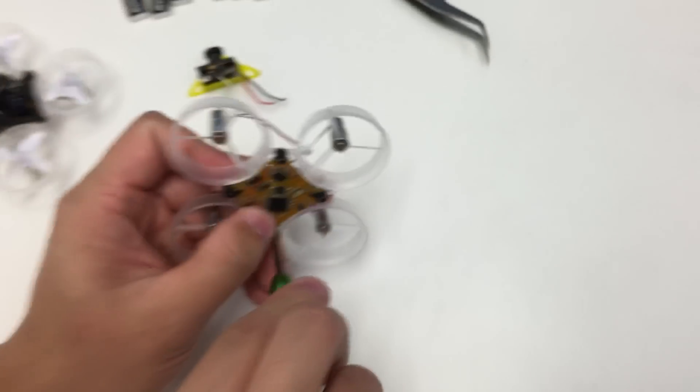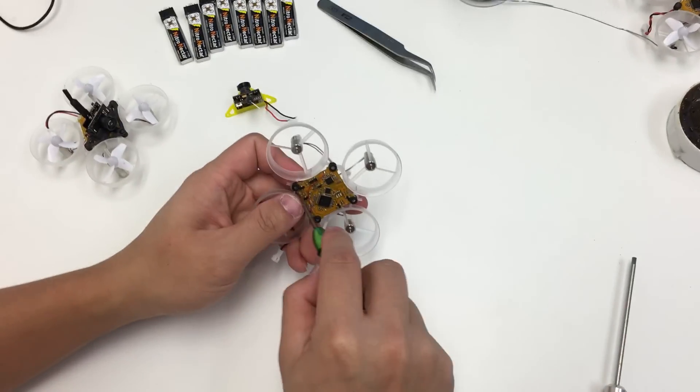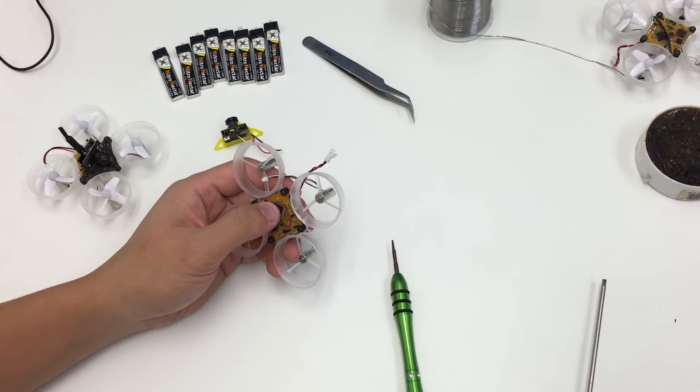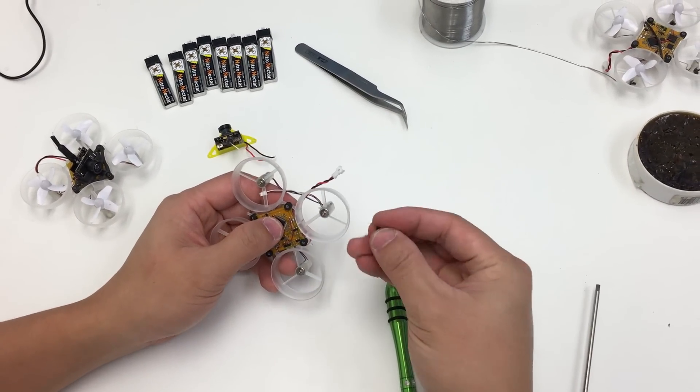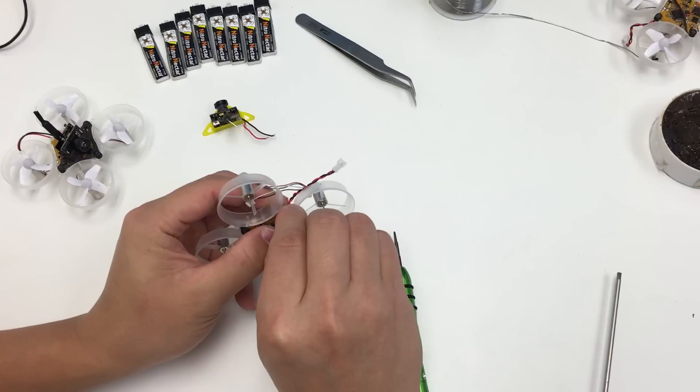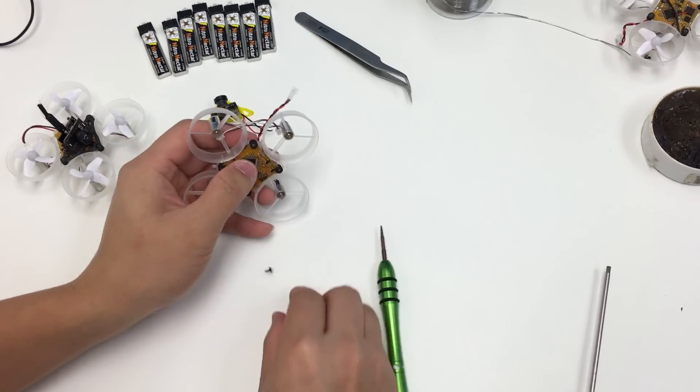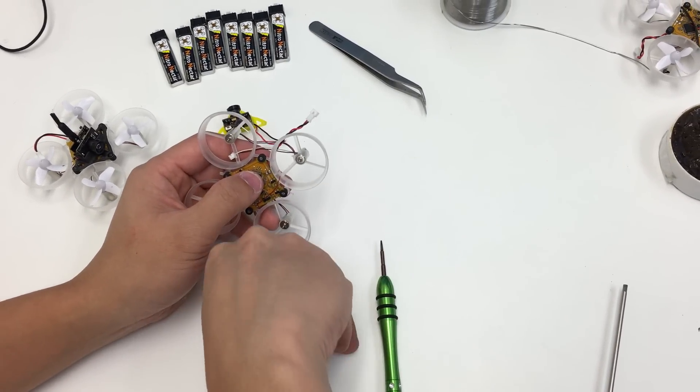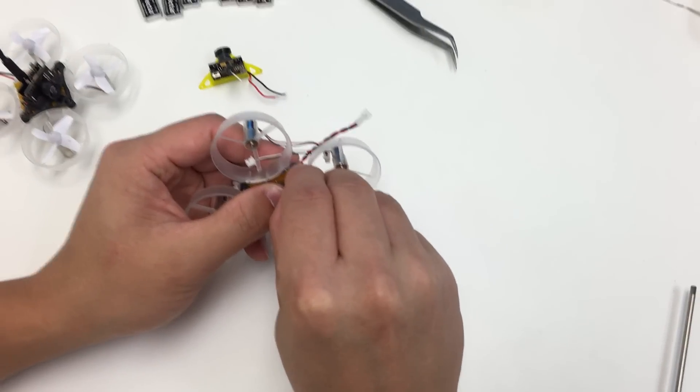One thing we also like to do here is make each of the holes a little bigger. It makes it easier for all the screws to actually go in. You don't need to do that, but we found it makes it easier when we build these out.